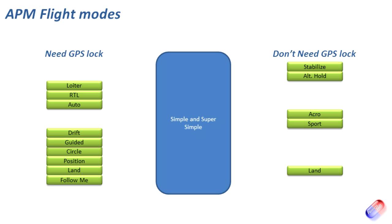Those Simple and Super Simple options are available on each of the mode settings. Now let's talk about which modes you have to be in to arm the board. You need to be in either Loiter, Stabilize, Altitude Hold, or Acro mode for the board to arm. If it's set to any of the others it won't arm — so if you're having problems, that's one of the things to check.